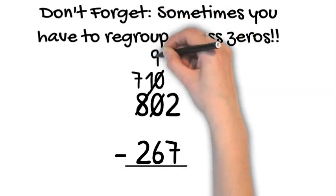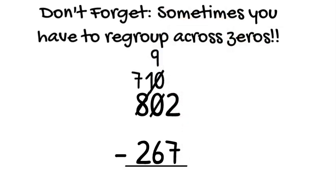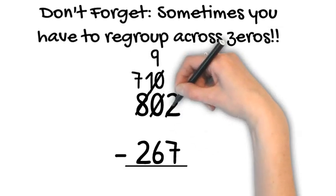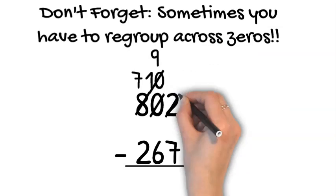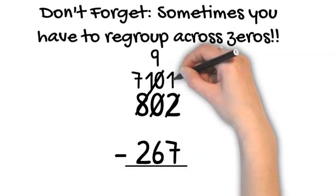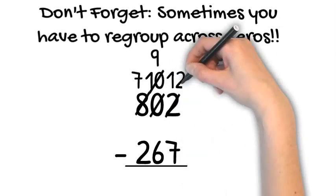10 take away 1 is 9. So we put a 9 on top of the tens place. Bring that 1 over to us. 1 ten stick plus 2 ones is 12. Now we're ready. 12 take away 7 is 5. We did it.